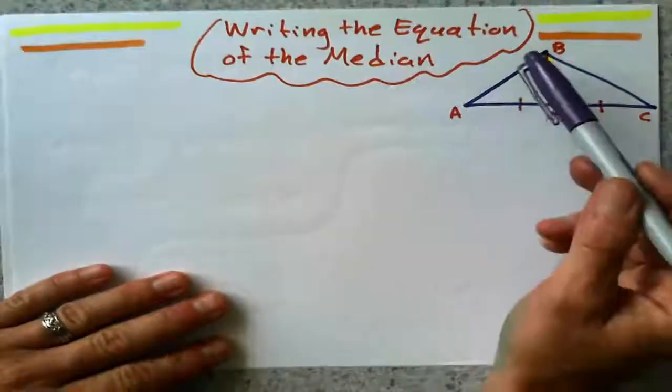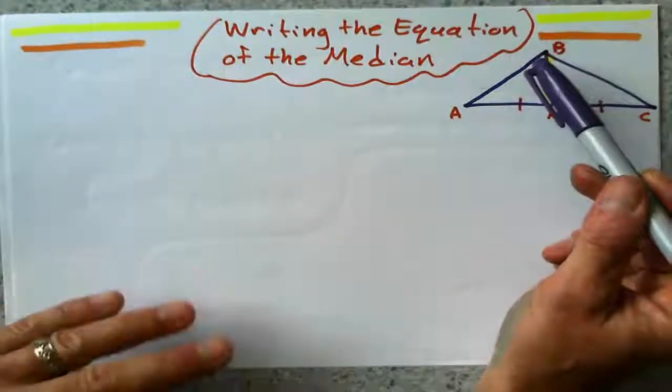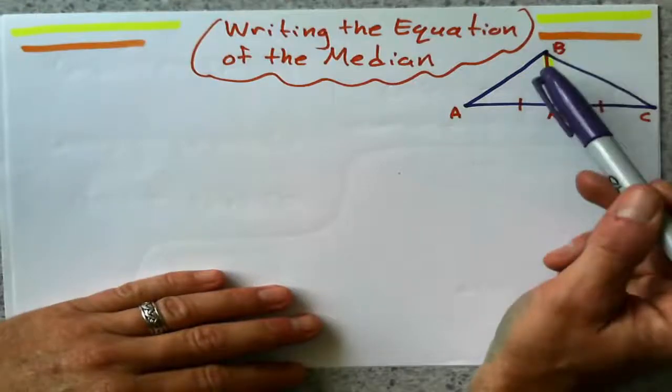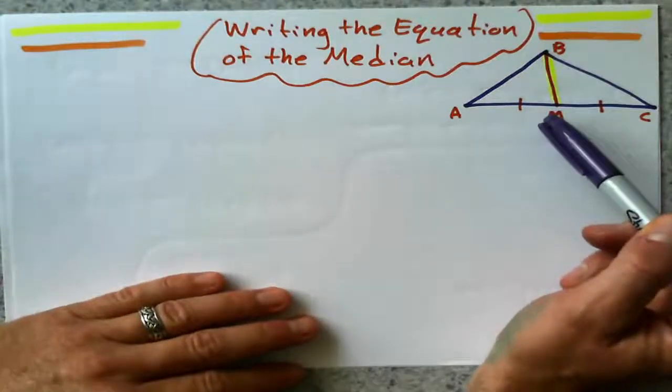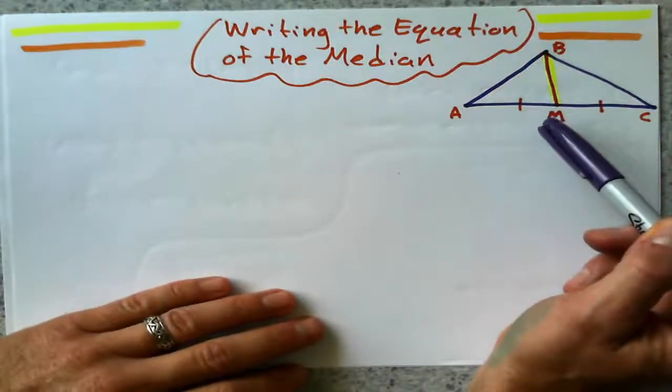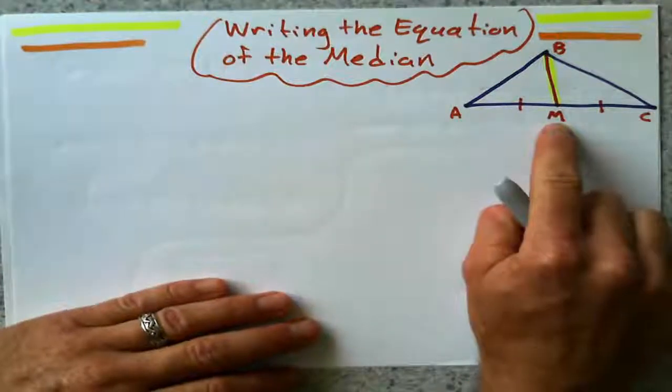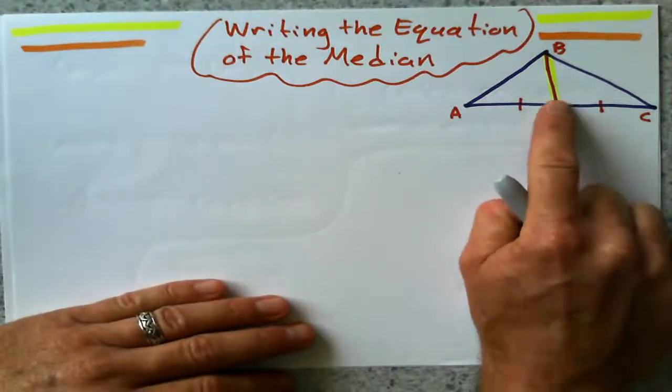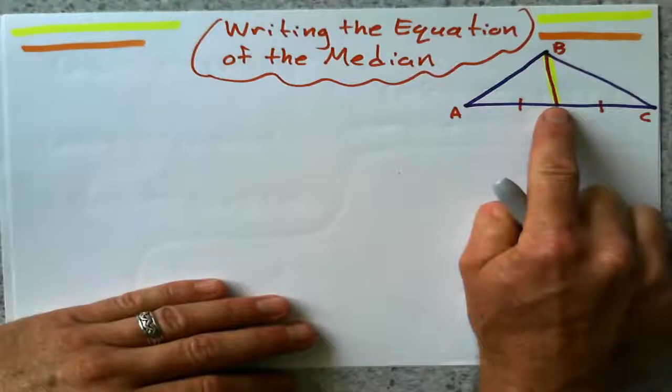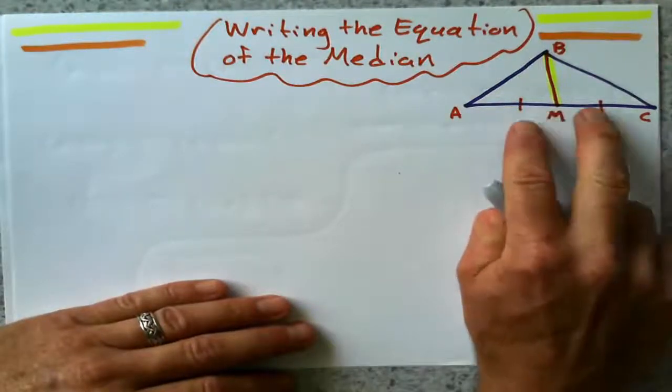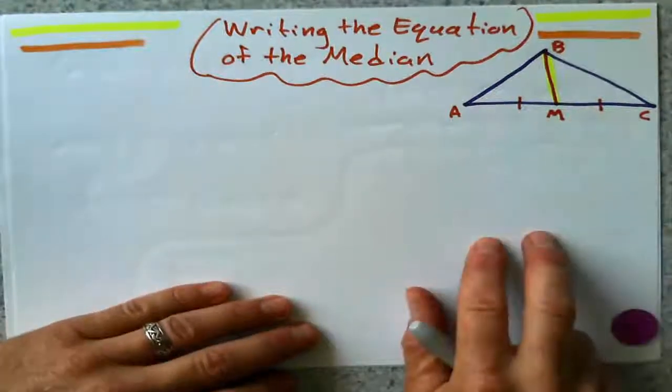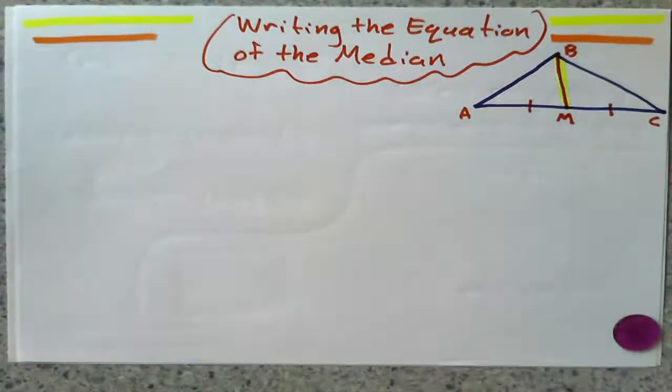Writing the equation of the median. What's a median? It starts at a vertex of a triangle, starts at a corner of the triangle, and hits the opposite side at the midpoint. Not necessarily 90 degrees, but definitely at the midpoint, which I'll use a capital M for midpoint. Midpoint bisects the side into two equal bits. How do we get the equation of that?